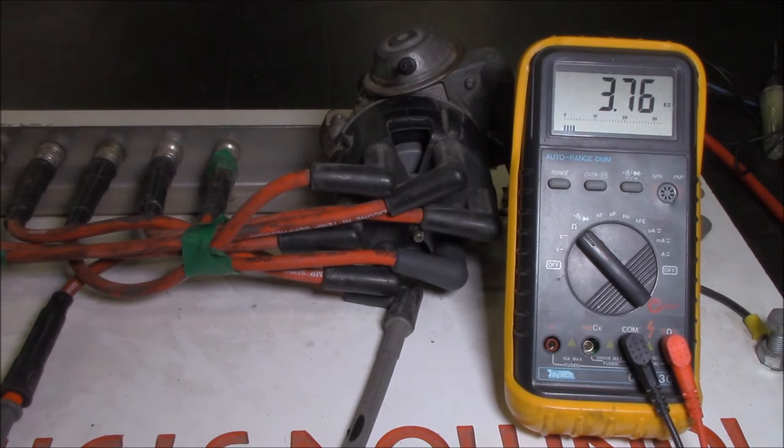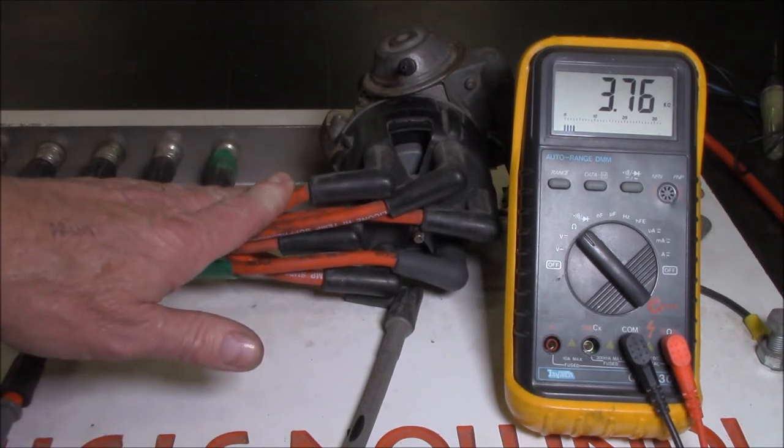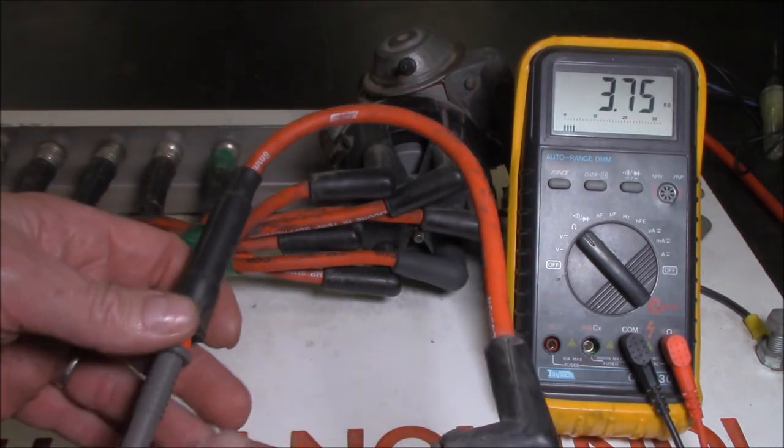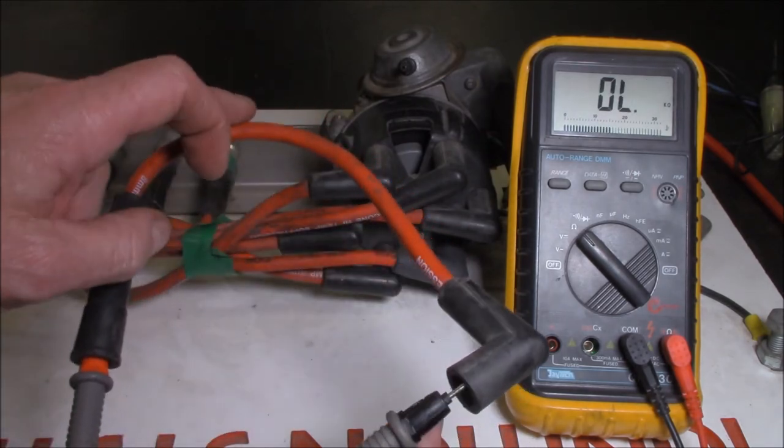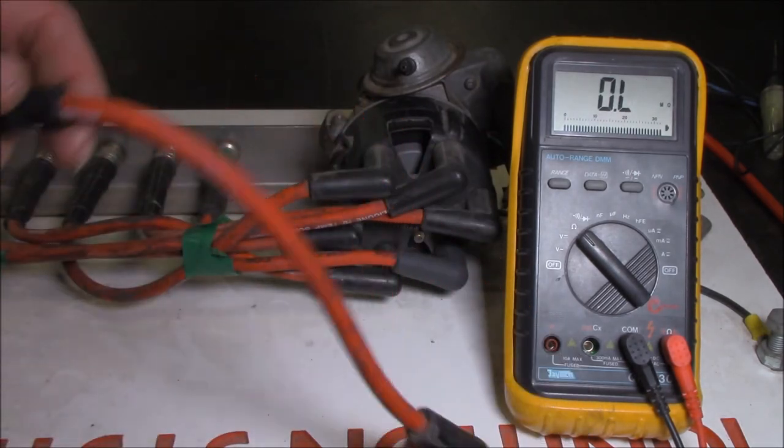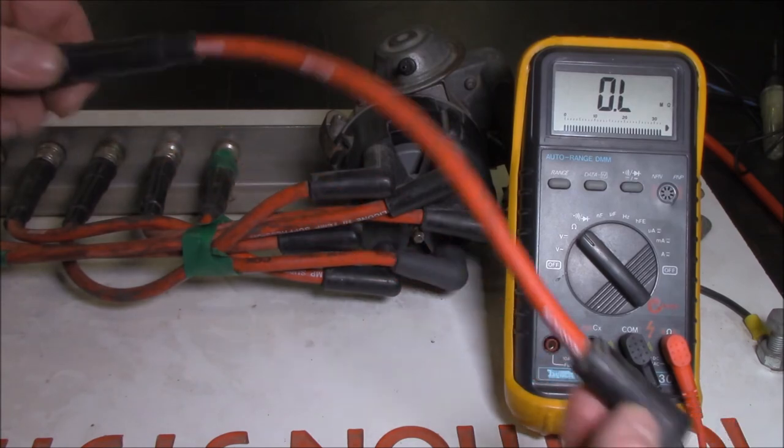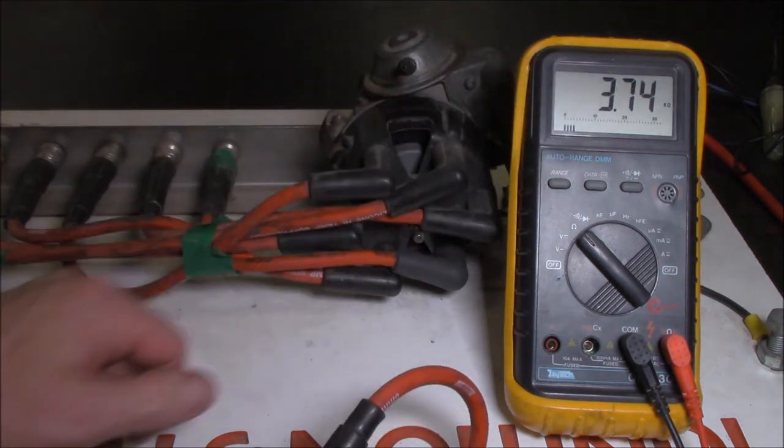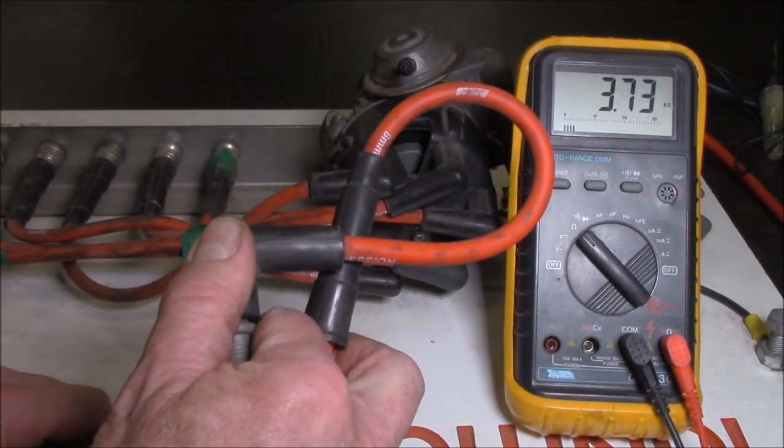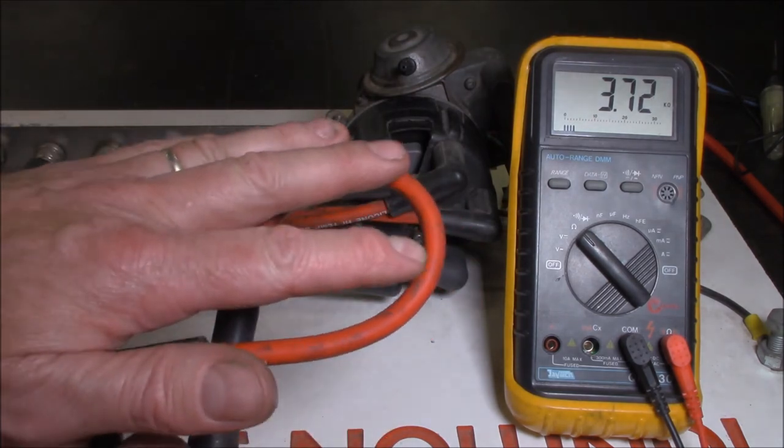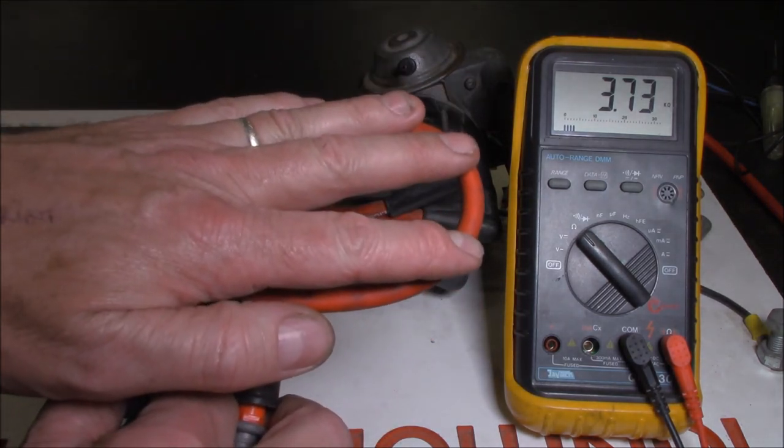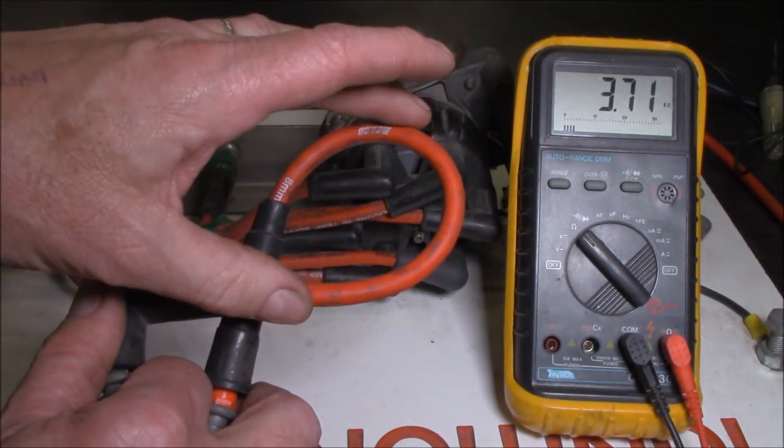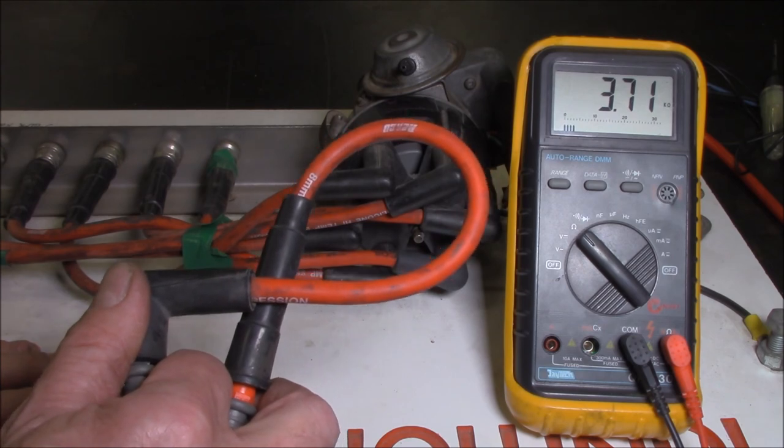Other things you might need to check in a plug lead style system with the distributor cap is the resistance of the plug leads themselves. Rule of thumb is 8 to 12 kilo-ohms per foot or say 300 millimeters. If we check the resistance here, we can see it's 3.74 kilo-ohms, and it's quite a short little fella. That's acceptable, but that doesn't mean it won't break down under load. When you accelerate hard and the mixture might be a bit lean, it might tend to break down. The only real way to check that is by means of an oscilloscope.